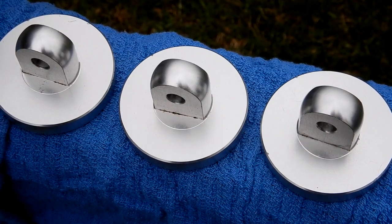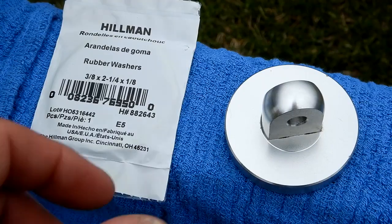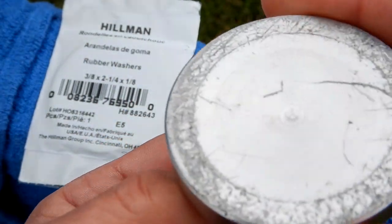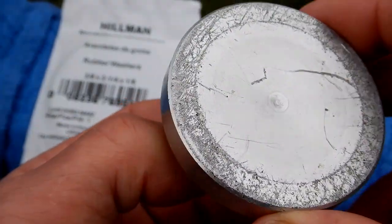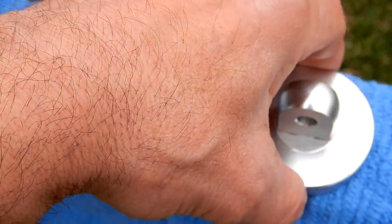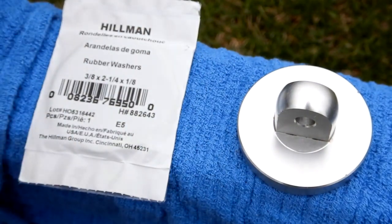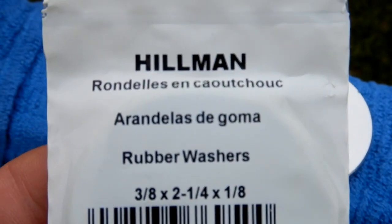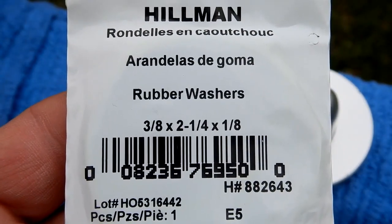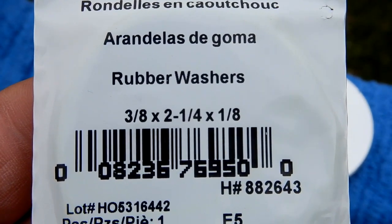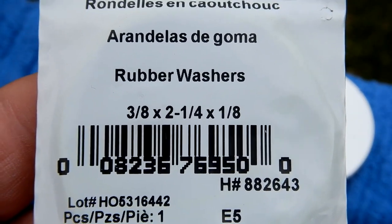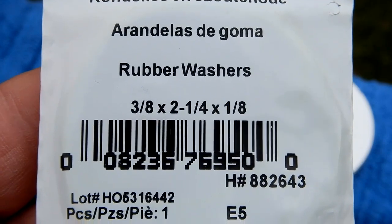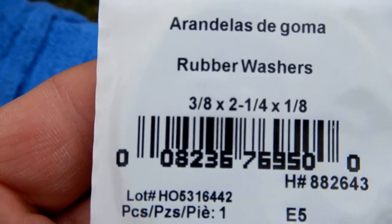Now the diameter of these feet are 2 and 1/4 inches. I was going to cut something and make something up, but I found this item. You can get these at Lowe's, anywhere that sells Hillman products. This is what I got: it's 3/8 inch by 2 and 1/4 inch by 1/8. So the center hole is 3/8 inch diameter, the overall diameter is 2 and 1/4 which perfectly matches the foot, and 1/8 inch thick.